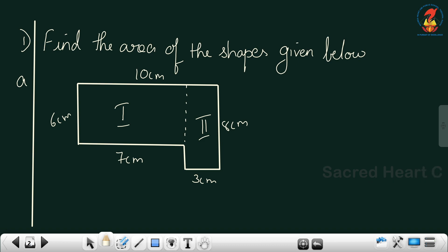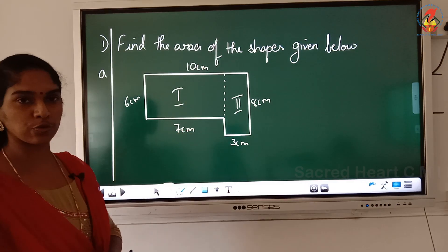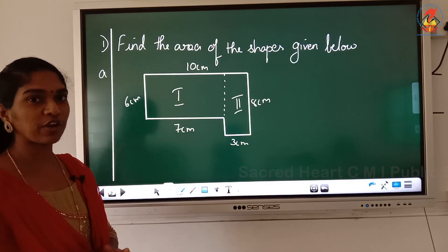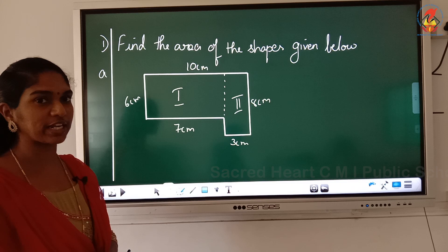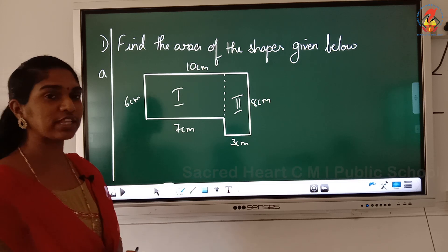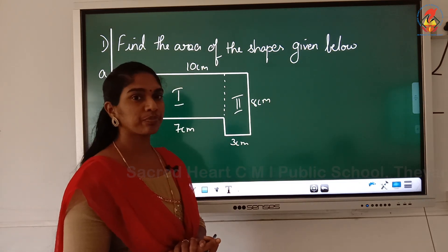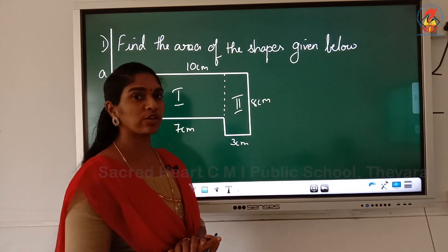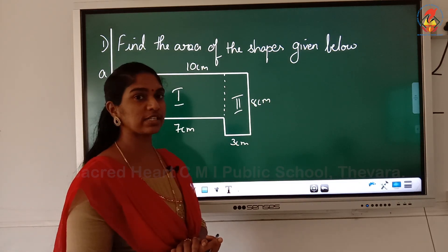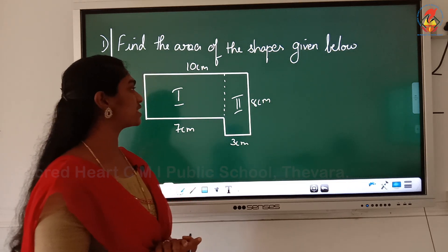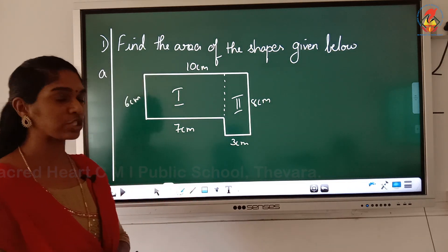So I can see two rectangles over here. We have learned how to find out the area of a rectangle. How do you find out the area of a rectangle, children? Area of the rectangle is equal to length into breadth.